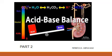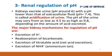I'll be continuing my recording of the second part of acid-base balance, where I'll be mainly dealing with the role of the kidneys in regulating the pH. This is the third line of defense. Kidneys excrete urine, the pH of which is around 6, lower than that of the extracellular fluid which is 7.4. This is called the acidification of the urine. The pH of the urine may vary from as low as 4.5 to as high as 9.8, depending upon the amount of acid excreted.